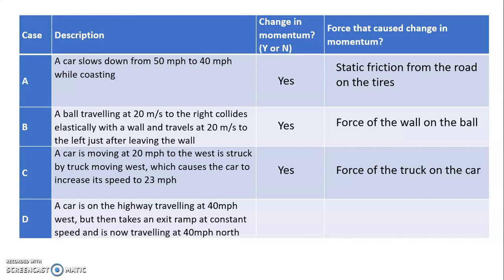Case D, we've got a car moving at 40 miles per hour west. Takes an exit ramp at a constant speed and is now going 40 miles per hour north. Is this a change in momentum? Absolutely. Just like in case B. It's the same speed but a different velocity because of the direction. Because of the direction change.